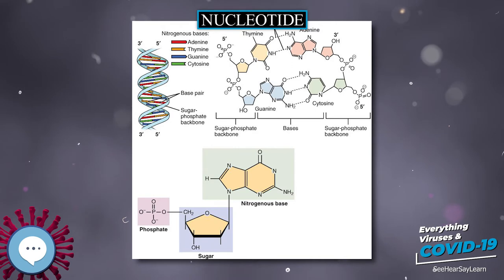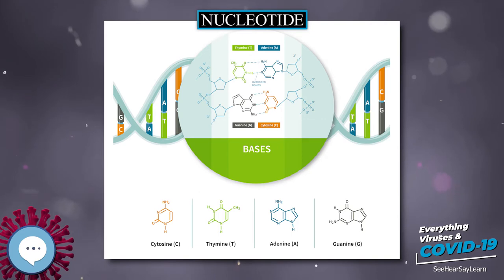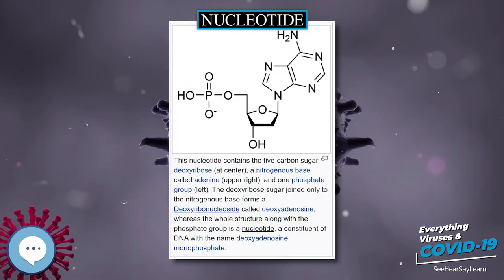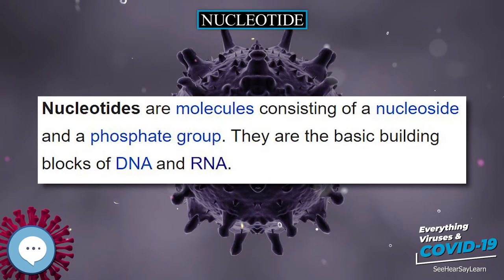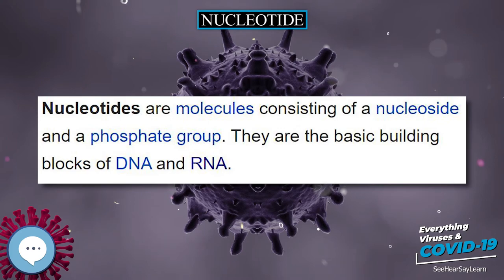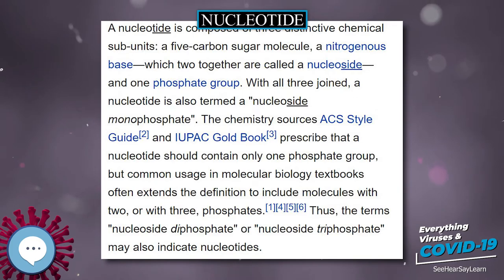Nucleotides are molecules consisting of a nucleoside and a phosphate group. They are the basic building blocks of DNA and RNA — organic molecules that serve as the monomer units for forming the nucleic acid polymers deoxyribonucleic acid (DNA) and ribonucleic acid (RNA), both of which are essential biomolecules within all life forms on Earth.